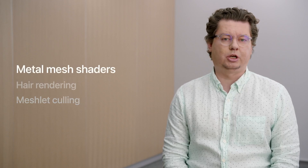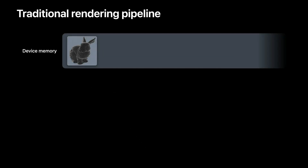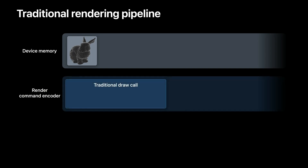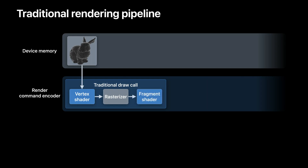Let's start with introducing Mesh Shaders. Here is the Stanford bunny, which represents a typical mesh that you could render on the GPU. In order to render this mesh, the vertex and index data would first have to be placed in device memory. You would then use a RenderCommandEncoder to execute a draw call. A traditional rendering pipeline consists of three fundamental stages: a programmable vertex shader stage, a fixed function rasterization stage, and a programmable fragment shader stage. This pipeline has been, and still is, serving its purpose extremely well. However, it lacks flexibility and has certain limitations.